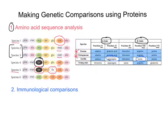Immunological comparison uses this blood protein albumin in an experiment to work out how similarly or how closely related two organisms are. This relies on the principle that antibodies of one species will respond to specific antigens on proteins in the blood serum of another species.